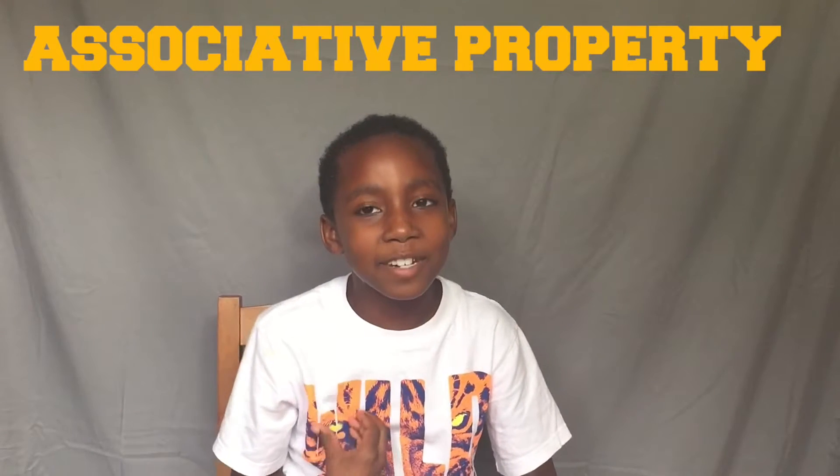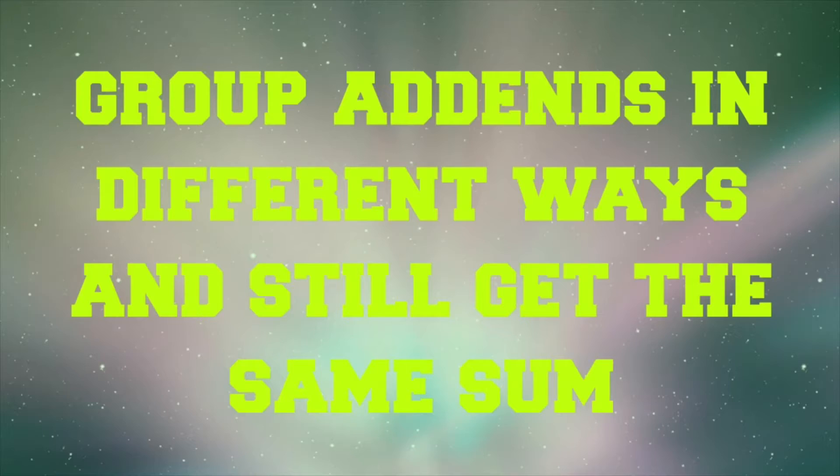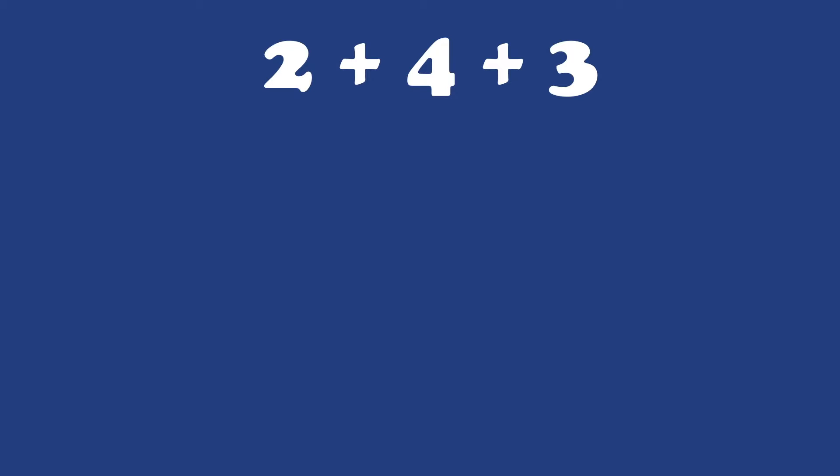Today we're going to be talking about associative property, when you can group atoms in different ways and still get the same sum. It works in addition and multiplication, just like commutative property. 2 plus 4 plus 3 is our equation. It's pretty easy, so we're going to group the 2 and the 4, and the 3 is separate.